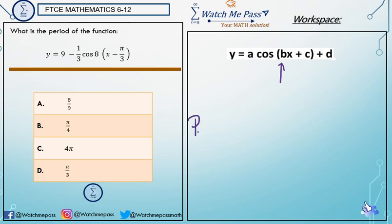Because the formula for the period of the function is 2π over b. Once you know b, it's easy to find the period of the function. So we want to identify what the b value is.